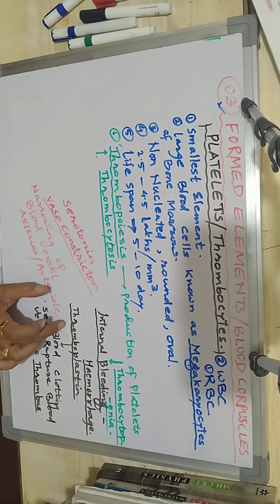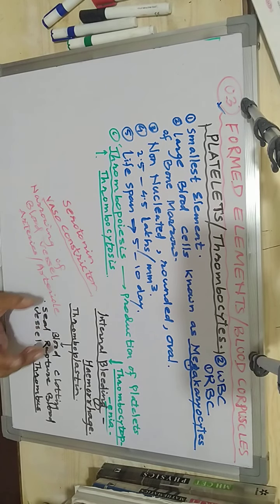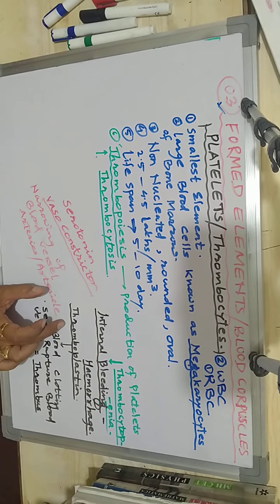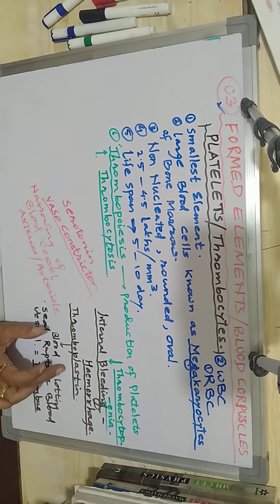At the site of injury, a chemical is released and that chemical is called thromboplastin. Thromboplastin is necessary for blood clotting to stop the bleeding.